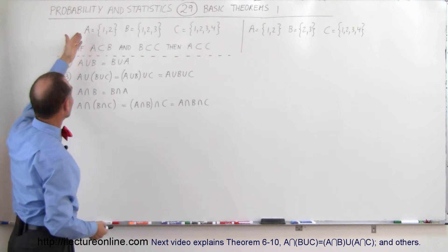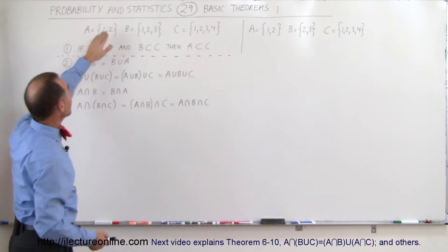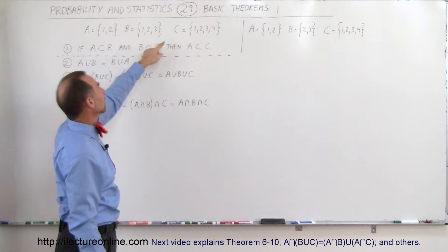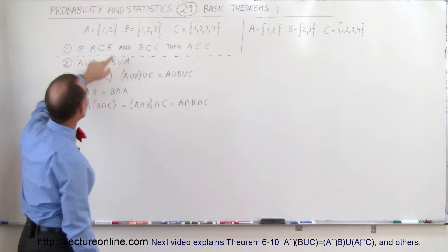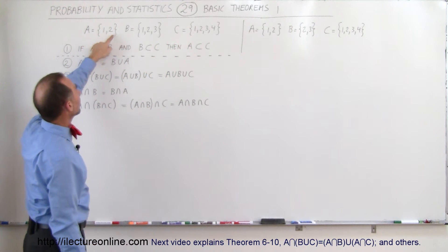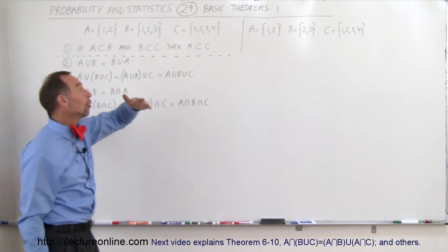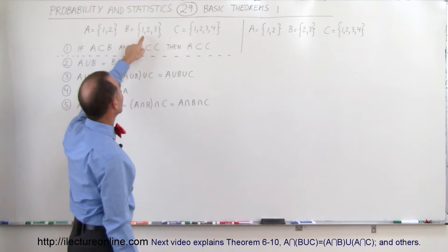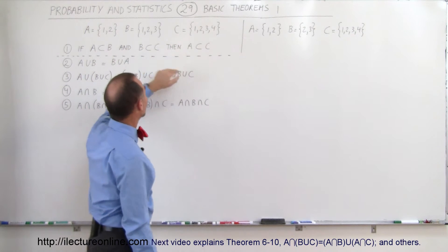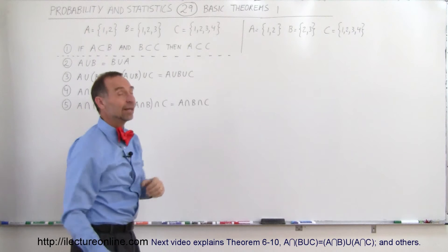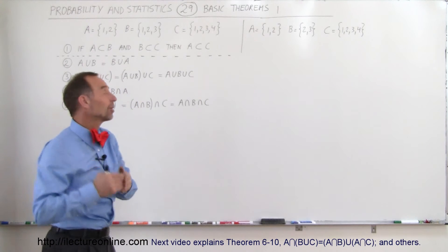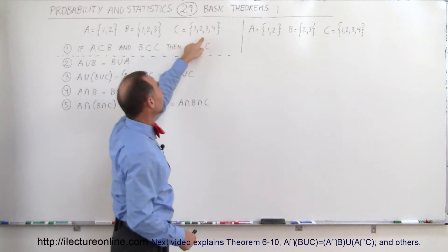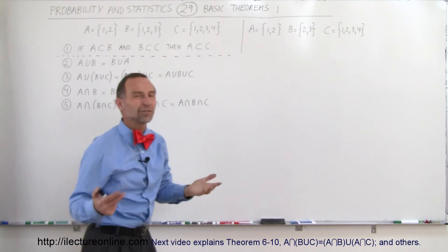For an example, we have three events: A, B, and C. A has the outcomes 1 and 2, B has the outcomes 1, 2, and 3, and C has the outcomes 1, 2, 3, and 4. You can see that all of the outcomes in A are also in B, so therefore A is indeed a subset of B. All the outcomes in B are also found in C, so therefore B is a subset of C. And if that's true, then A must be a subset of C — notice that 1 and 2, the two outcomes of A, are also in C, so we know that A must be a subset of C.